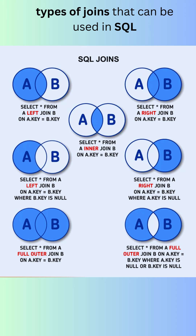The second example shows a right join. The left table is still called A and the right table is still called B. The join condition is the same. The result of the join is that all rows from table B are returned, even if there are no matching rows in table A.